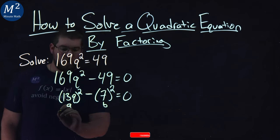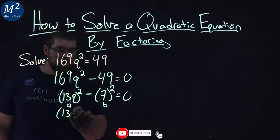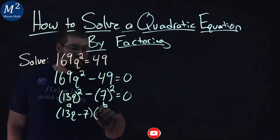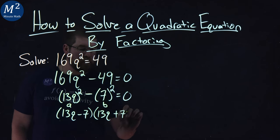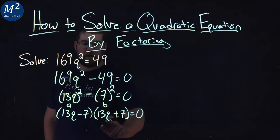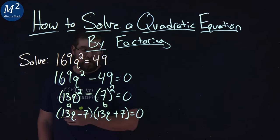So we apply the difference of squares here. I would have 13q - 7, times 13q + 7 = 0. And I can separate that out using the difference of squares property.